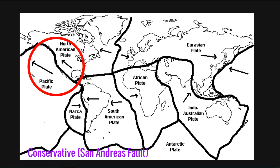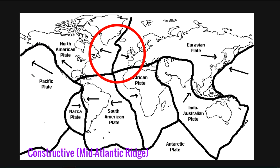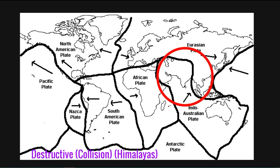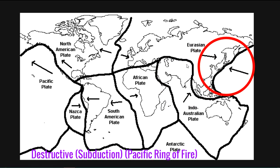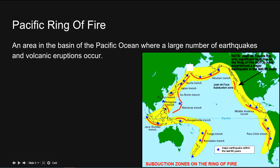Here on this map, we have the conservative San Andreas Fault where the two plates are moving past each other. Here we have the constructive Mid-Atlantic Ridge plate margin. Here we have the destructive collision plate margin where the Himalayas are shown in blue. And finally, the destructive subduction plate margin forming part of the Pacific Ring of Fire — an area in the basin of the Pacific Ocean where a large number of earthquakes and volcanic eruptions occur, with earthquakes and subduction zones around the Pacific.